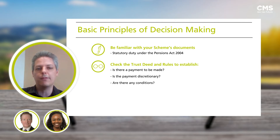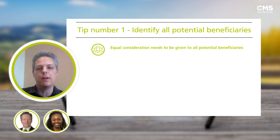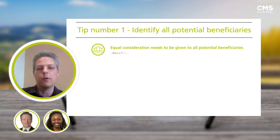Moving on to our top five tips in discretionary death cases: the first point to think about before any decision is taken is considering the list of potential beneficiaries, as the benefit can only be paid to someone who falls within the class permitted by the scheme's rules. Equal consideration should also be given to all potential beneficiaries that fall within that class. This will vary from scheme to scheme, but it will often include any spouse, civil partners, financial dependents and children.